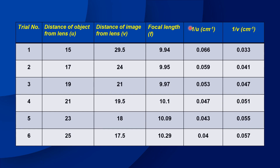1 by U means U is the reciprocal, that is cm raised to minus 1. 1 by V means V is the reciprocal, also in cm raised to minus 1.